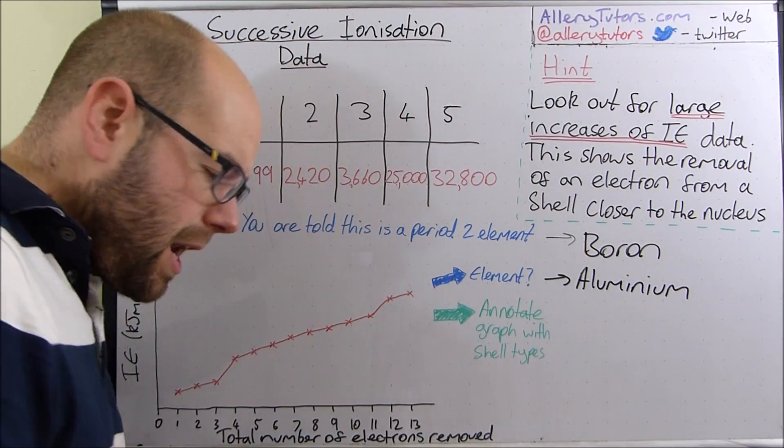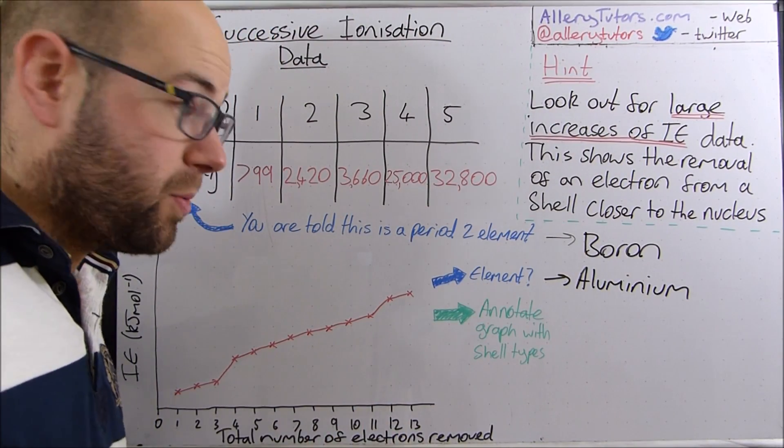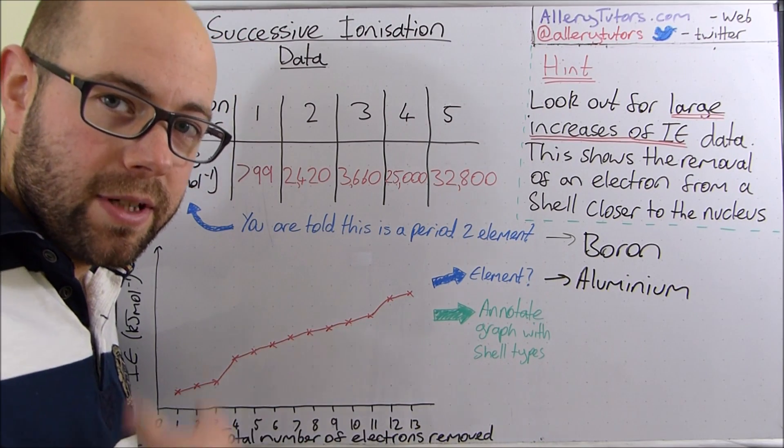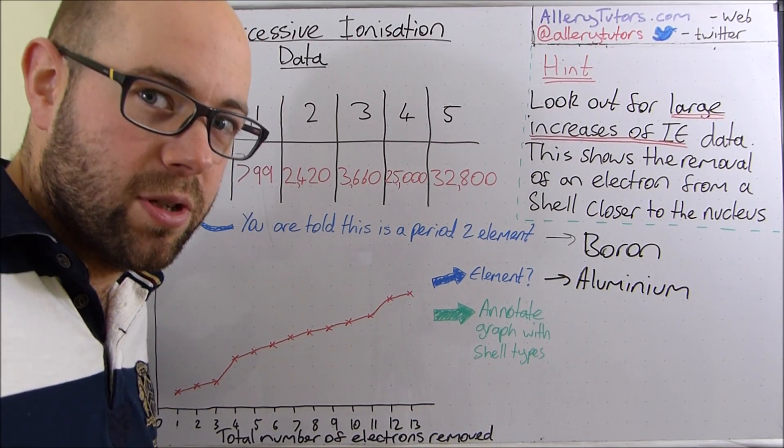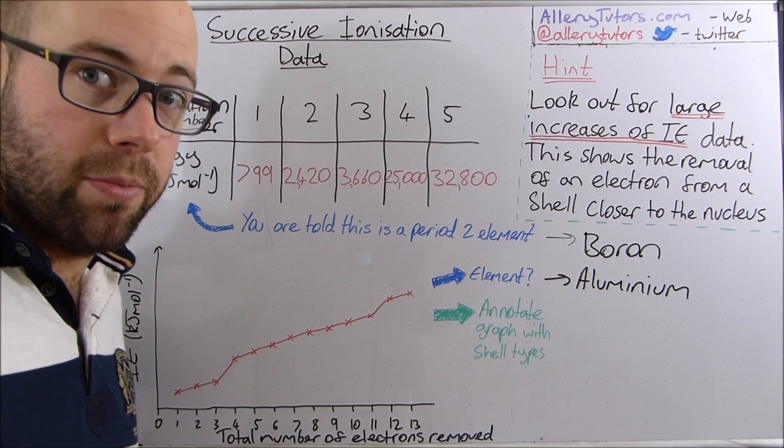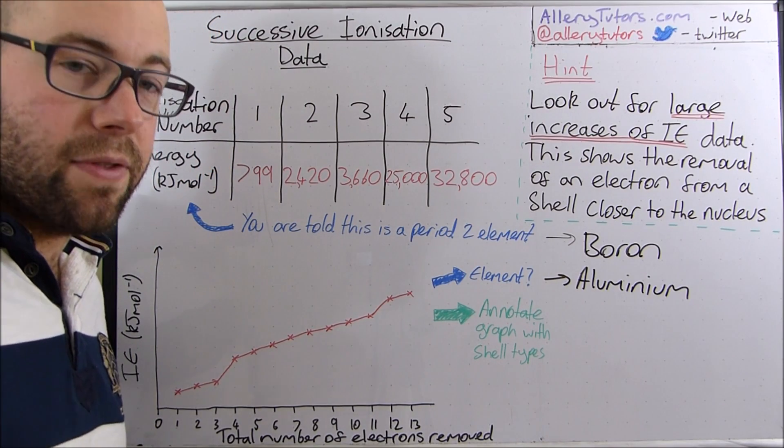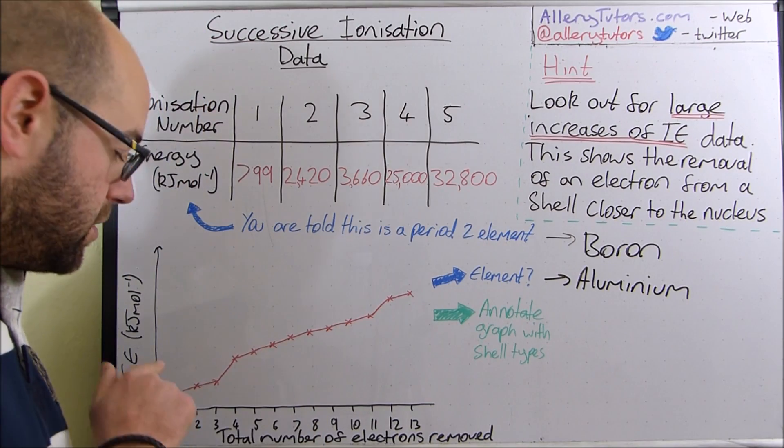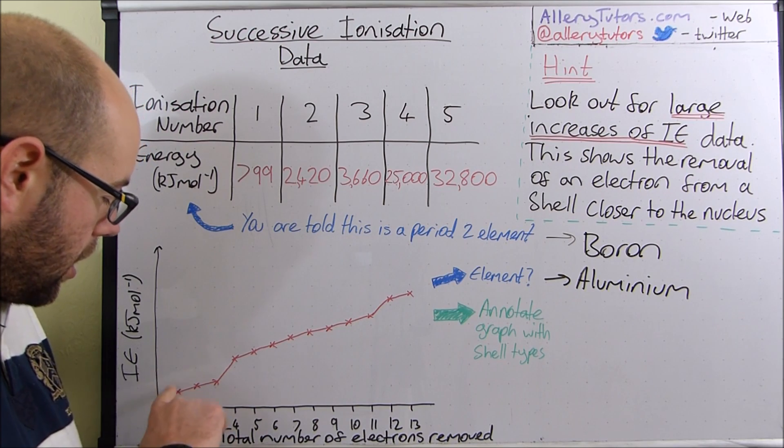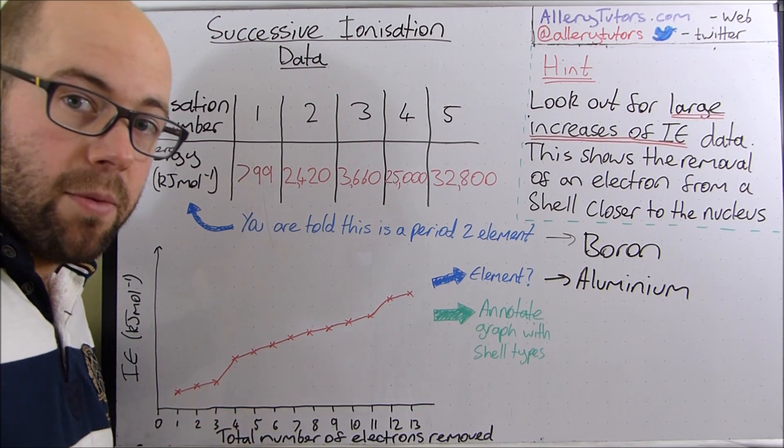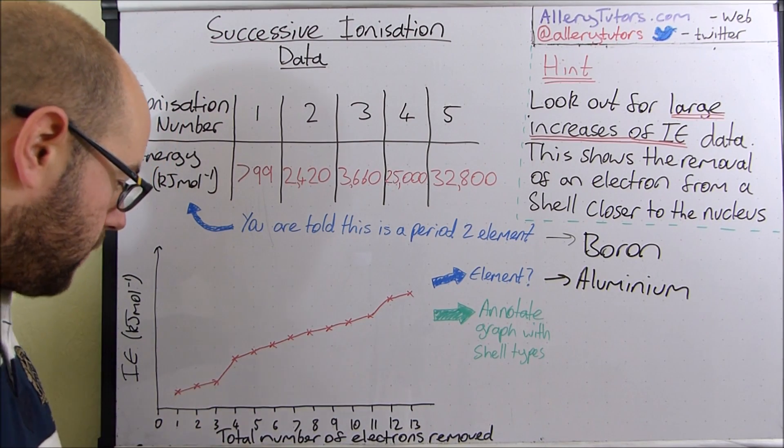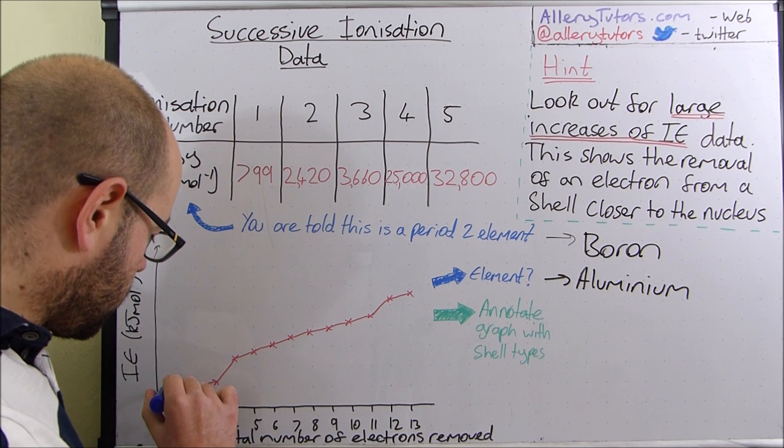We then also have to annotate it with the shell types, and you can see that we've got these various jumps here. Each one of these represents a shell. Now aluminium is in group 3, so you would expect it to have 3 electrons in the outer shell. Its outer shell is in the bottom left-hand corner, because this is the area where we've got the lowest ionisation energy. Remember, it's easier to remove electrons that are furthest away from the nucleus. So these three represent the third shell of electrons.